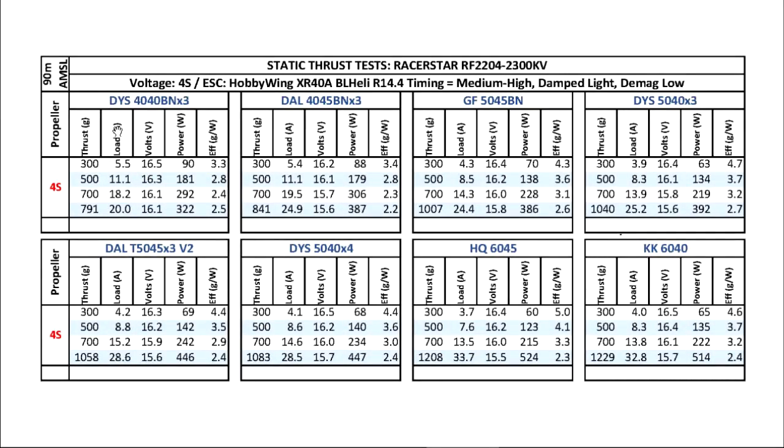Okay, that was the thrust test for the RacerStar RF 2204 2300kV motor. For 4-inch prop, 4x4x3, we get about 800 grams. That's a pretty respectable amount out of a 2204. Then we move on to the 5-inch prop, we're looking at about 1000 grams, the lower 1000 grams for the 5-inch props. And the 6-inch props, we're looking at about 1200 grams thrust.